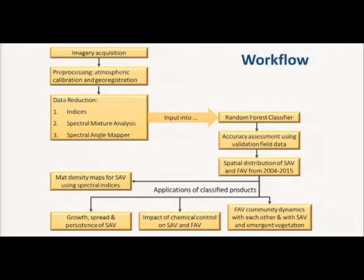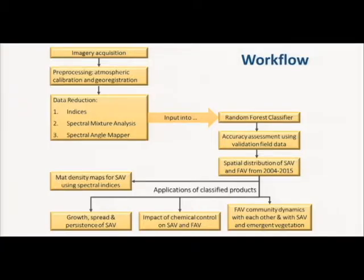We now have spatial distributions mostly at the species level, though for the submerged species it's mostly as a class from 2004 through this year. If Davis ever gets the contract signed with the state, JPL is going to fly the delta again in about two weeks. We have the Space Act agreement in place but haven't secured the money yet. It's a three-year grant, and they're going to extend it for three more years of flights.